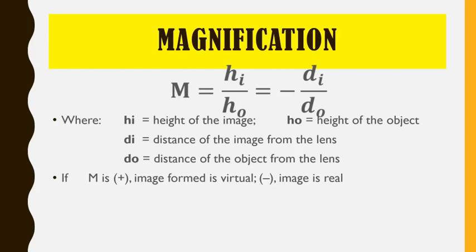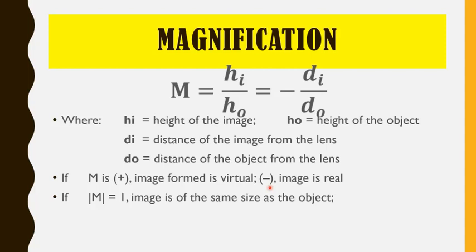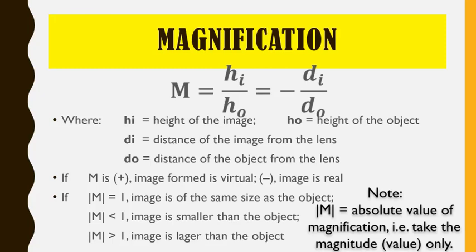If M, the magnification, is positive, you can immediately say that our image formed is virtual. But if it is negative, then the image is real. If the absolute value of the magnification equals one, the image is of the same size as the object. If the absolute value of the magnification is less than one, like 0.9 or 0.8, the image size is definitely smaller — the image is reduced. And if the absolute value of the magnification is greater than one, like 1.5 or 2, the image is larger than the object.